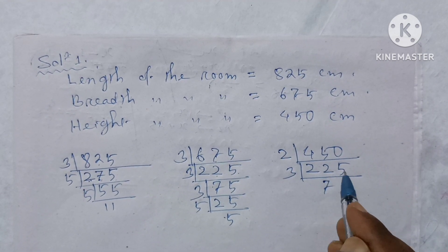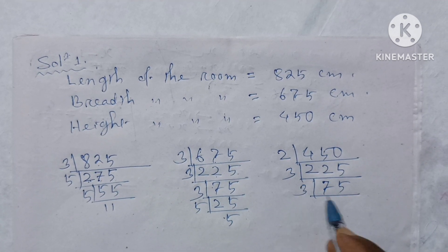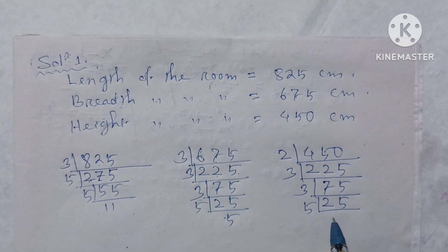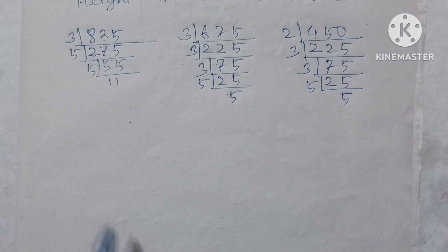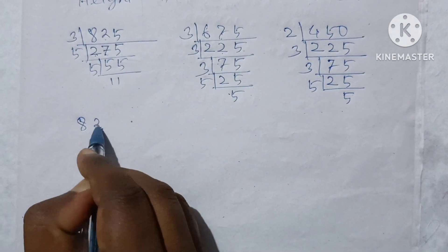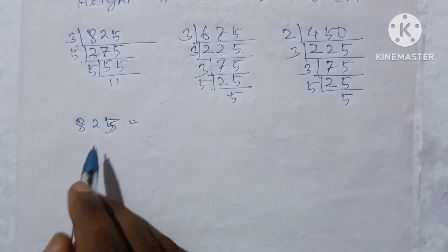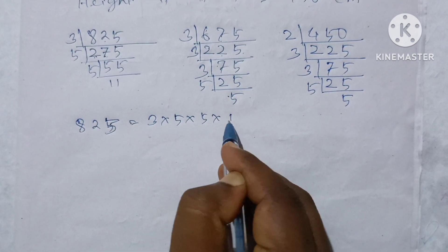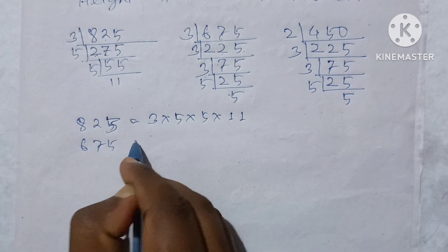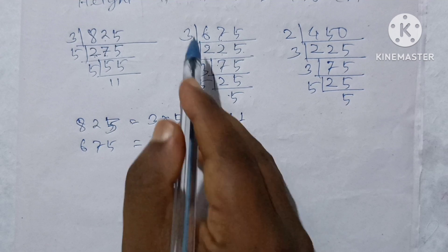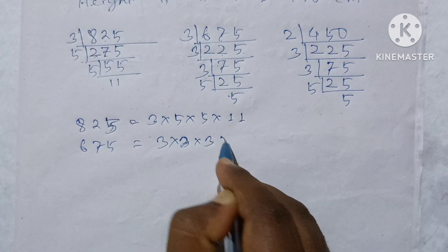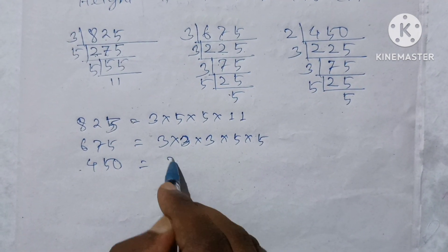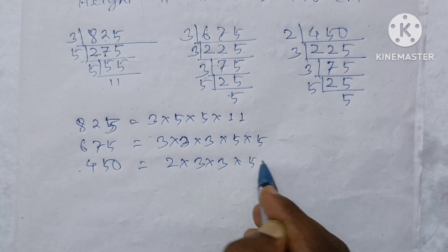If you take 4 into 3, then 4 into 3 into 2, then 4 into 3.15, we get 8 into 5 into 11. Then 675 equals 3 into 3 into 3 into 5 into 5. Next, 450 equals 2 into 3 into 3 into 5 into 5.